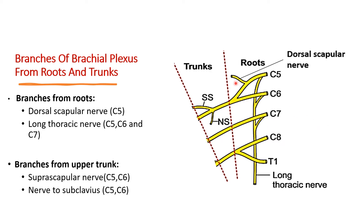First is the dorsal scapular nerve — root value C5. Second is the long thoracic nerve — root value C5, C6, and C7.